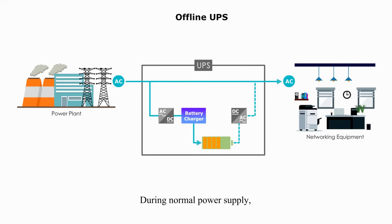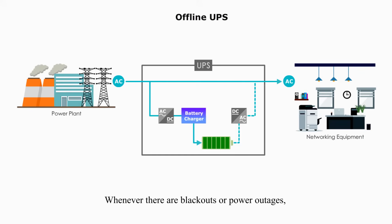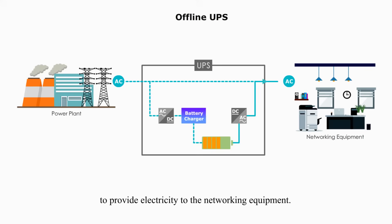During normal power supply, the offline UPS charges connected batteries. The rectifier converts AC to DC, and the charger charges the battery. Whenever there are blackouts or power outages, the offline UPS will switch on and use its battery to provide electricity to the networking equipment.